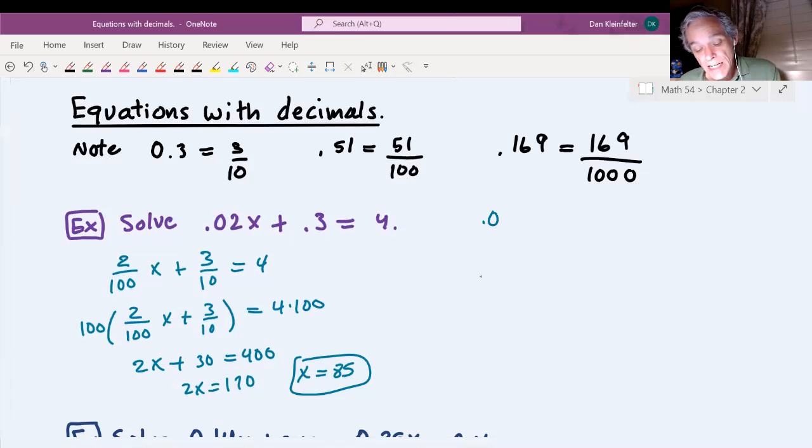In terms of decimals, going back to the original equation, there's two decimals in the equation, 0.02 and 0.3. Which one has more digits behind the decimal point? The 0.02 does. It has two digits behind the decimal point.